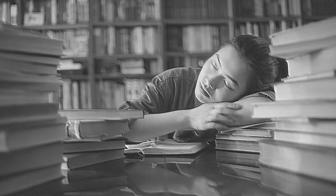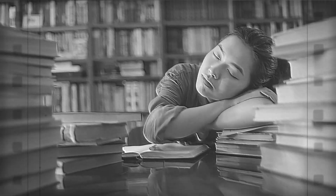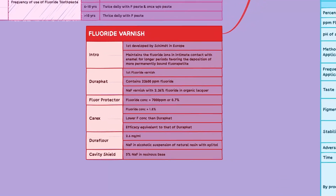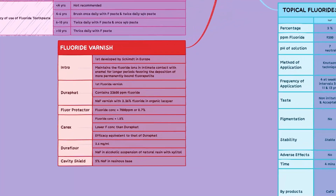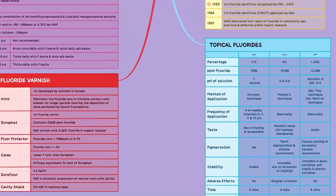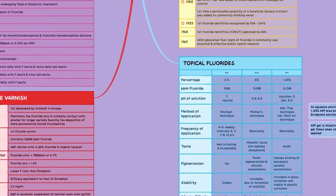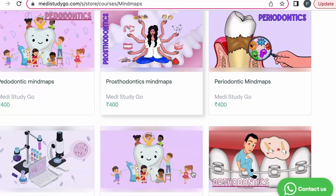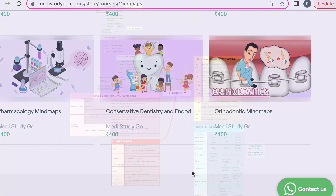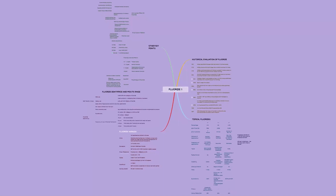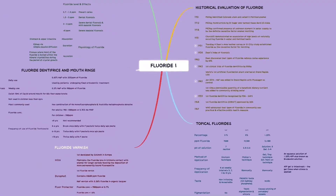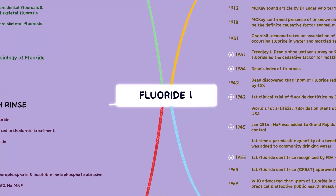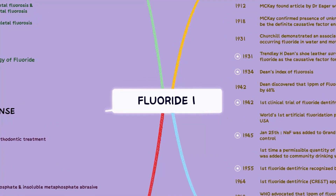Say goodbye to monotonous books and say hello to colorful interconnected mind maps. In this series, we will quickly help you revise important concepts with the help of mind maps, which you can access later using our app. In this video, we will cover some concepts related to fluorides. You can grab your notebooks for this one and make a note of the points in the mind map.